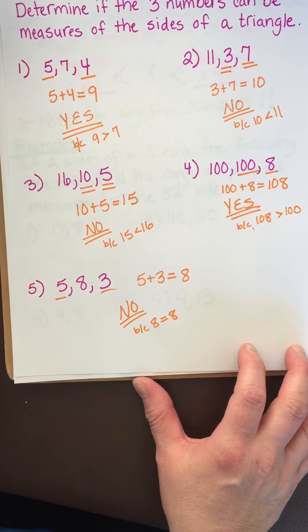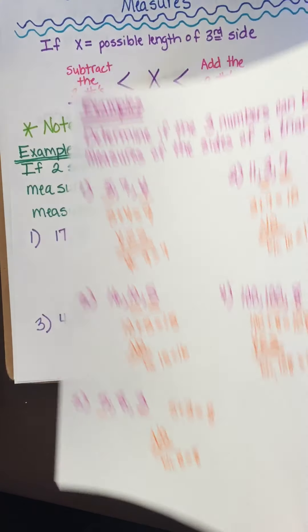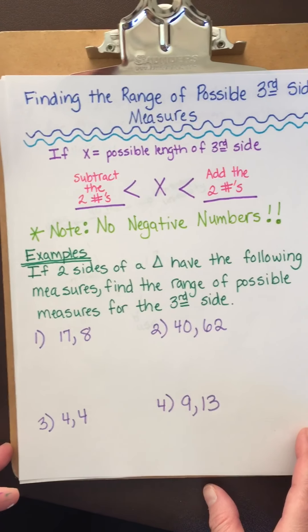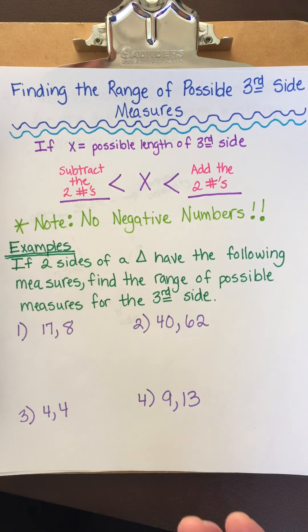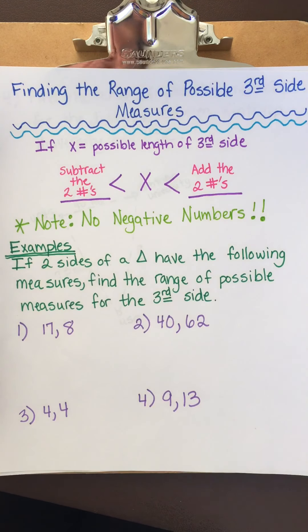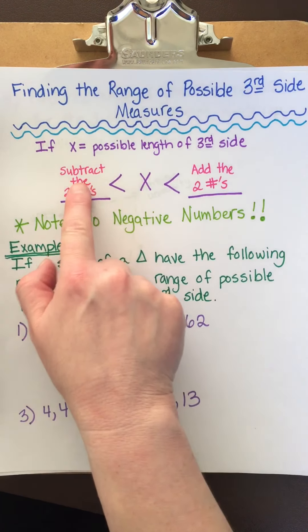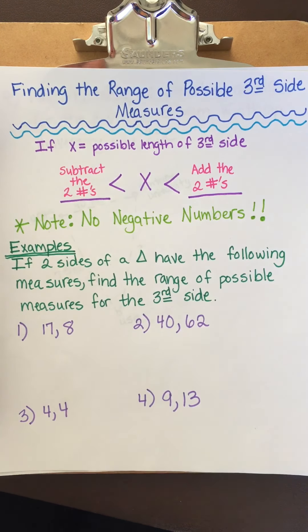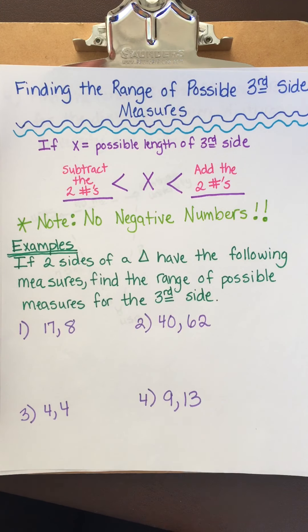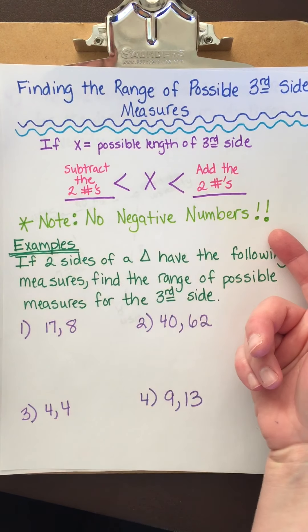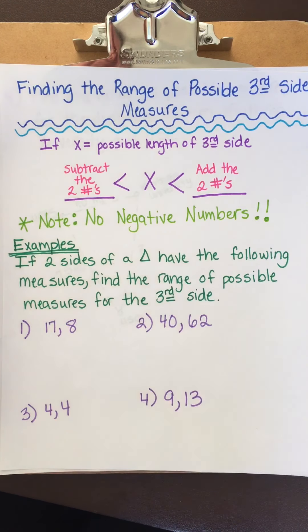All right. So let's move on to the next part. And what you need to be able to do is if I say, hey, there's this triangle and one side is this and the other side is that, what could the third side be? And this is how you figure that out. So we're finding the range of possible third side measures. So if X represents the possible length of the third side, all you have to do is basic first grade math. You subtract the two numbers and it goes on this side of the compound inequality. And then you add the two numbers and it goes on this side of the compound inequality. You remember these compound inequalities? Algebra one's great, right? Note, no negative numbers. So you're always going to subtract the small number from the big number. Side lengths can't be negative. I can't measure my table and get a negative number. So no negatives.